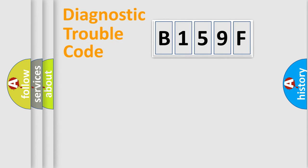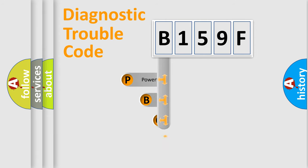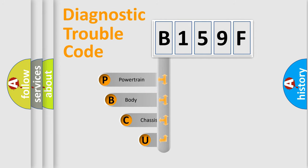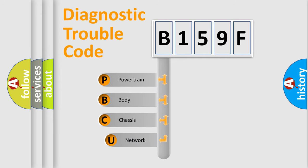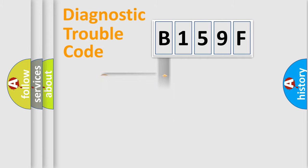Let's do this. First, let's look at the history of diagnostic fault code composition according to the OBD2 protocol. We divide the electric system of an automobile into four basic units: powertrain, body, chassis, and network.